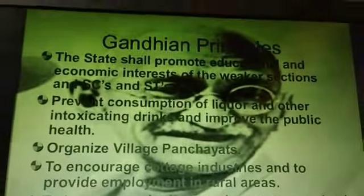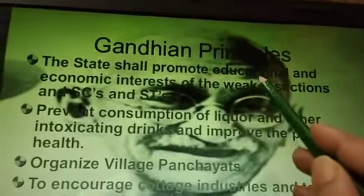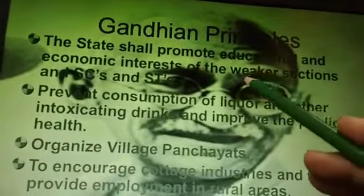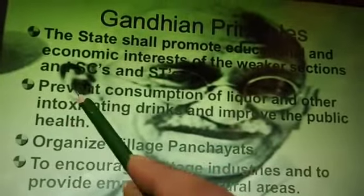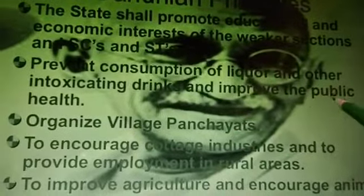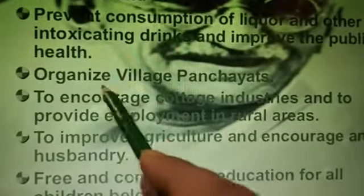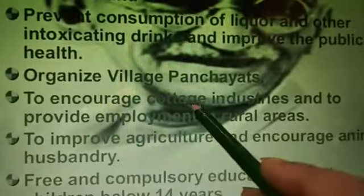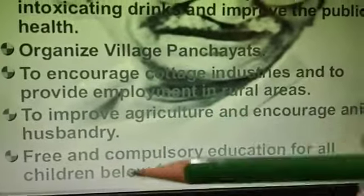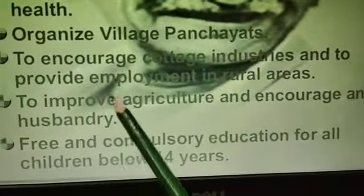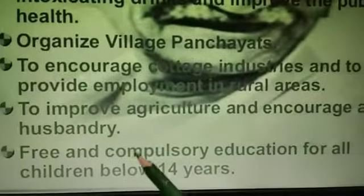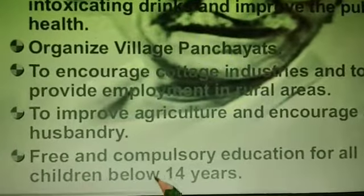Moving on to Gandhian principles. According to Gandhiji, the state shall promote educational and economic interest of weaker sections — that means the weaker or minority sections such as SCs and STs should be uplifted. It prevented consumption of liquor and all kinds of intoxicating drinks to improve public health. It also influenced organizing village panchayats and encouraged cottage industries so that people could get employment in small rural areas. It improved agriculture and encouraged animal husbandry. According to Gandhian principles, free and compulsory education has to be provided for all children below 14 years.